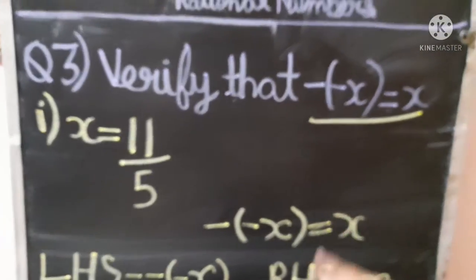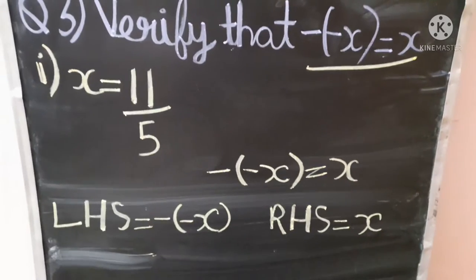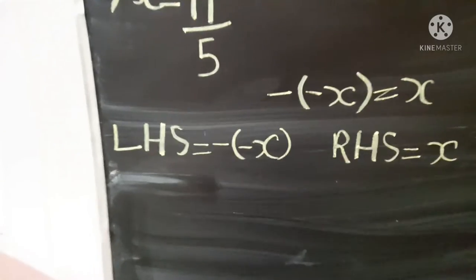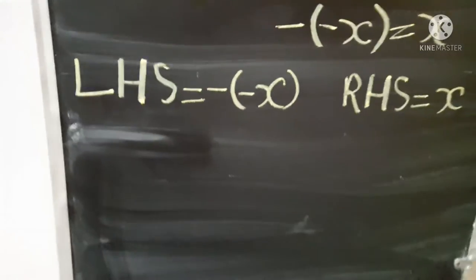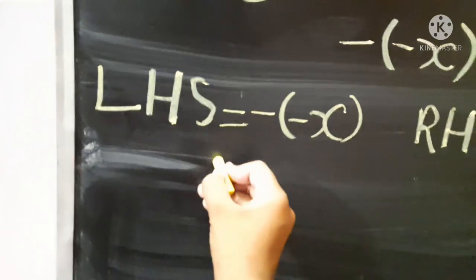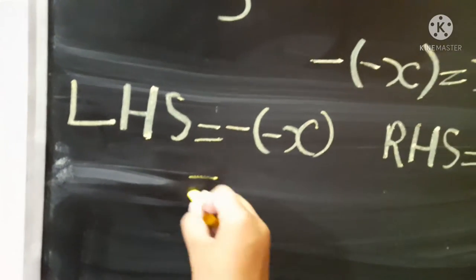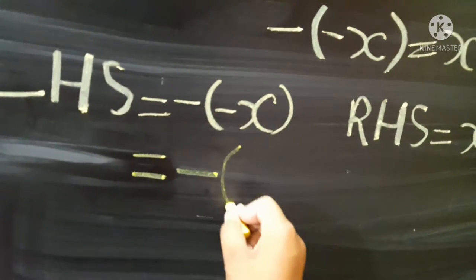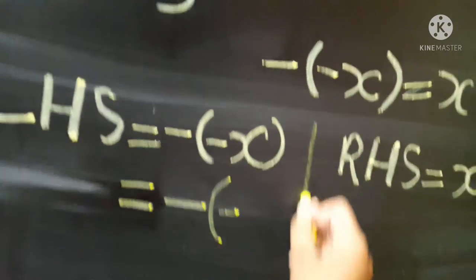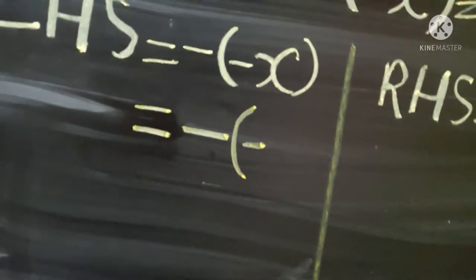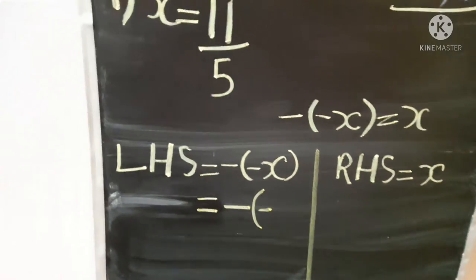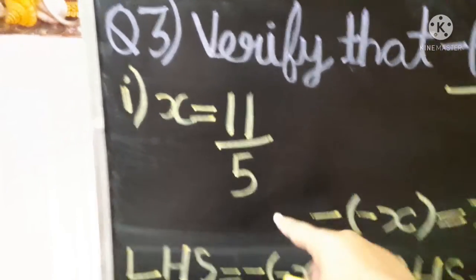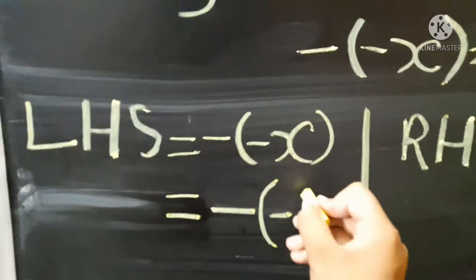Let us solve the LHS first. There will be a minus sign, then bracket, minus sign, and then the x value which is given to us as 11 upon 5.